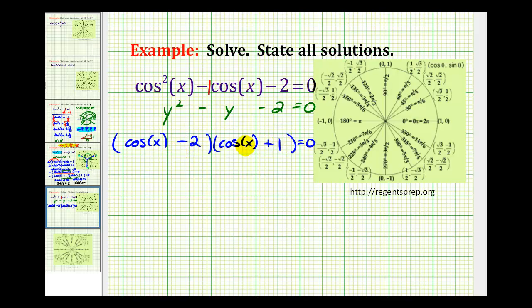So if we're multiplying these together and the product is equal to 0, cosine x minus 2 must equal 0 or cosine x plus 1 must equal 0. And now we'll solve these equations for cosine x. So we'll add to here, we're going to have cosine x equals 2. And here we'll have cosine x equals negative 1.